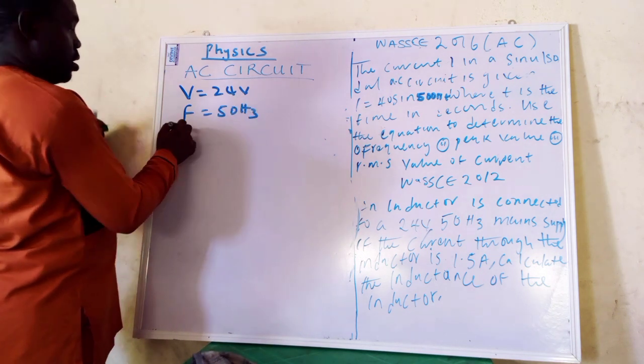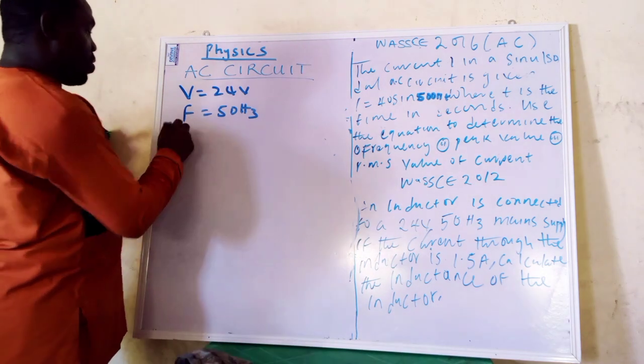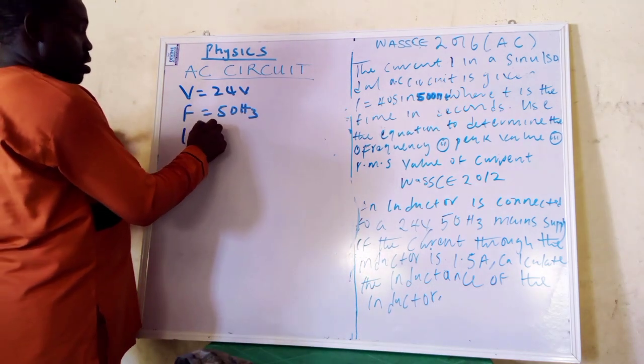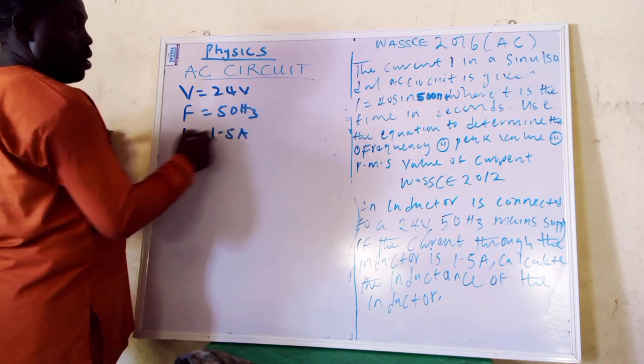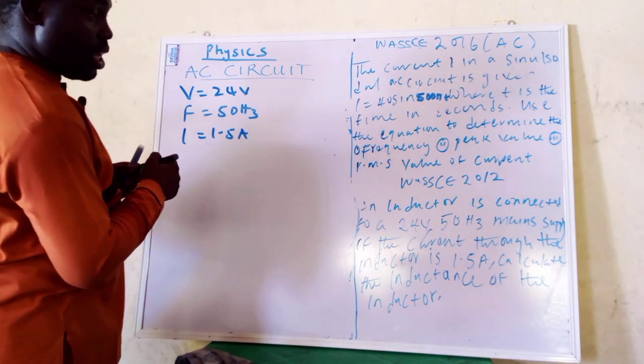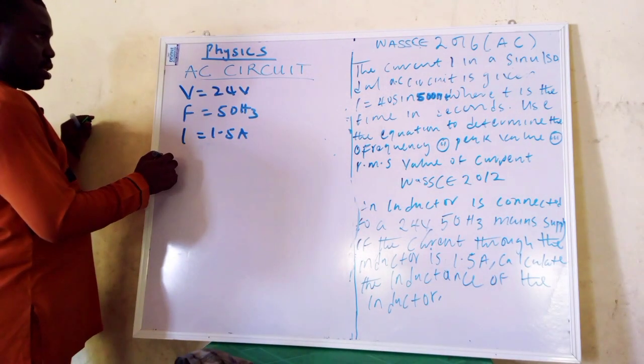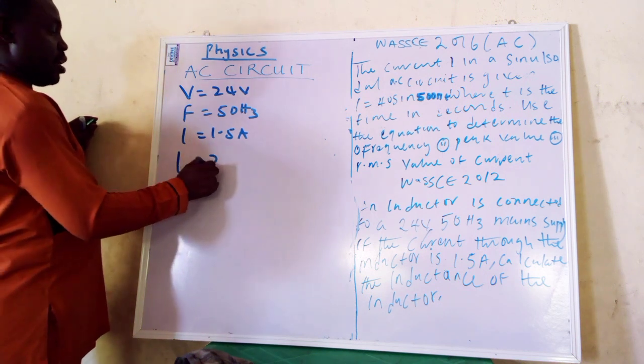Okay, go ahead. Oh, it's current given. Current is given to us as what, please? 1.5 ampere. Okay, that's all. We are not giving any other thing. What are we now asked to find? Okay, so we are looking for L.